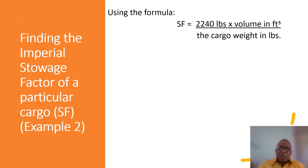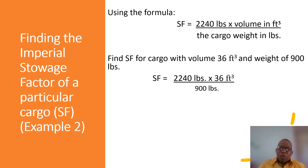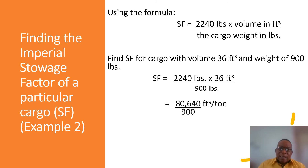Let's look at another example using the same imperial formula. We are given a volume of 36 cubic feet and a weight of 900 pounds. Plugging those values into the formula: 2240 lbs × 36 ft³ ÷ 900 lbs gives us 80,640 divided by 900, resulting in an answer of 89.6 cubic feet per ton.